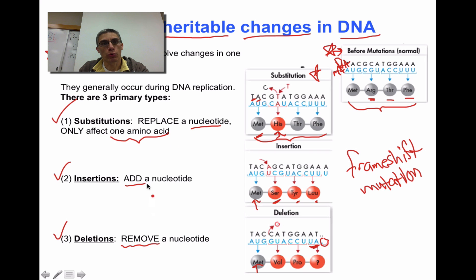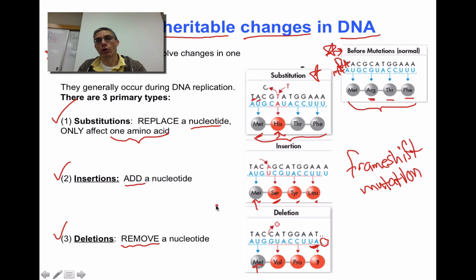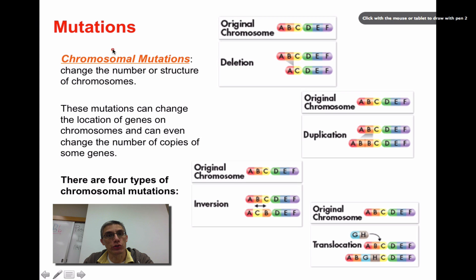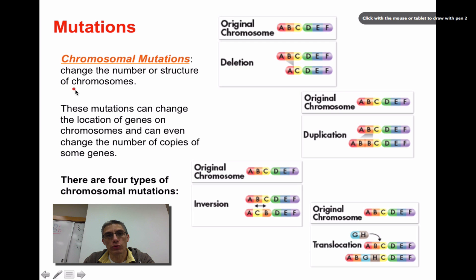So, three types of point mutations: substitutions, insertions, and deletions — you need to be very familiar with all three. The second type of mutation is called a chromosomal mutation. The idea of what happens is kind of similar, but in this case you are actually changing the number or the structure of the chromosomes.